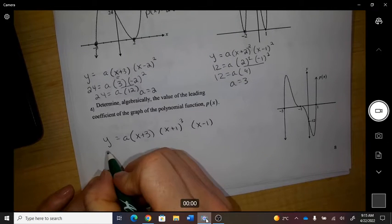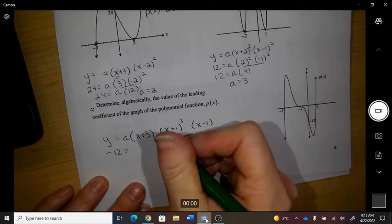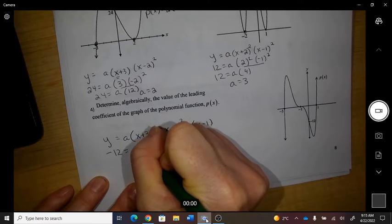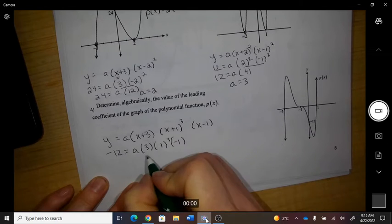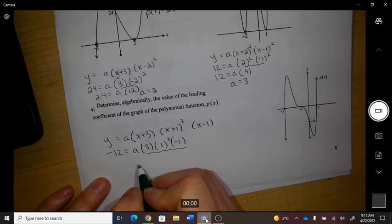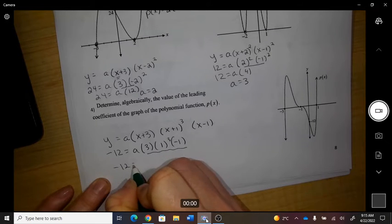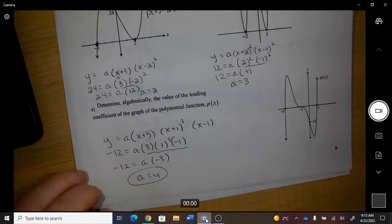So y is going to be negative 12 when x is 0. So all that, 3 times 1 times negative 1, is negative 3, so therefore the coefficient is 4.